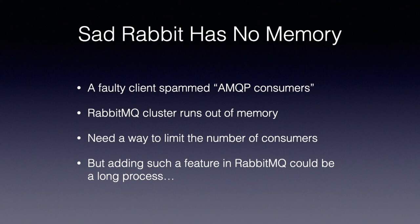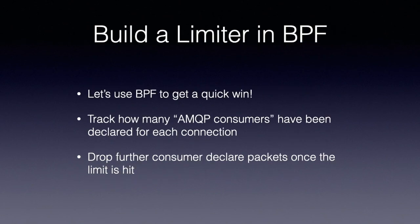We had a production incident caused by a faulty client, which created tens of thousands of AMQP consumers, and that quickly exhausted RabbitMQ's memory, rendering the entire service unavailable. We need to find a way to prevent this, for example by limiting how many consumers are allowed, but adding such a feature in RabbitMQ will be a long process. Instead, we can use BPF to do it outside of the application.